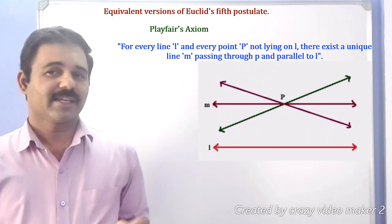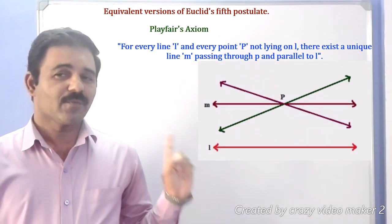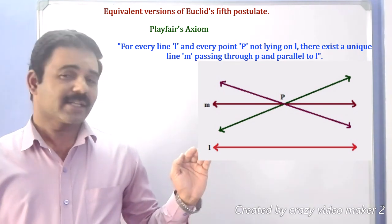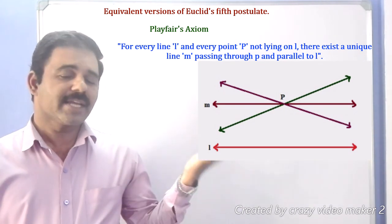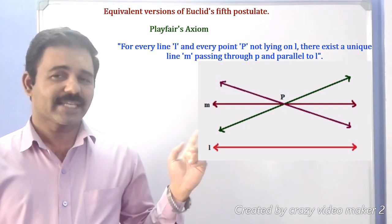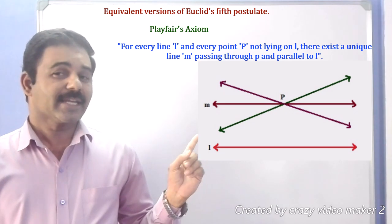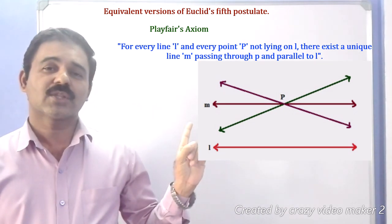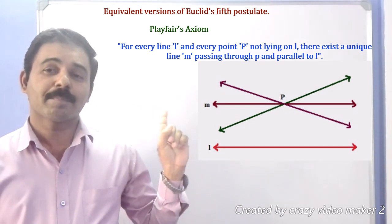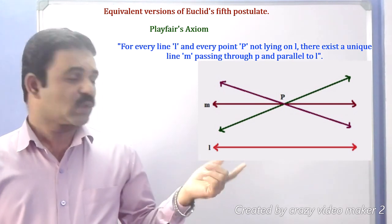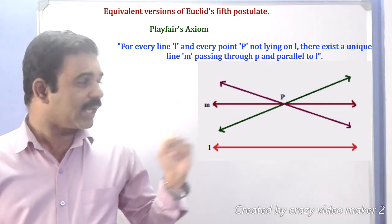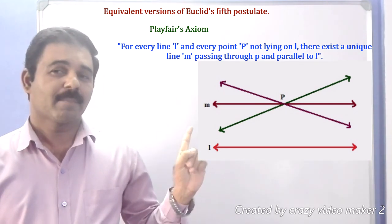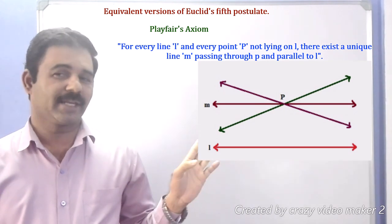See here, in this figure, L is the given line and P is the point that is not lying on the line L. There exists only one line M which is passing through the point P and parallel to L. Two other lines are there, but they are not parallel to L, though they are passing through the point P.